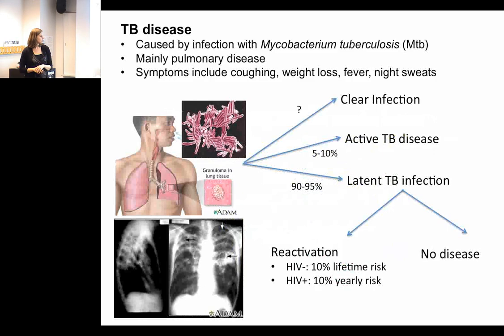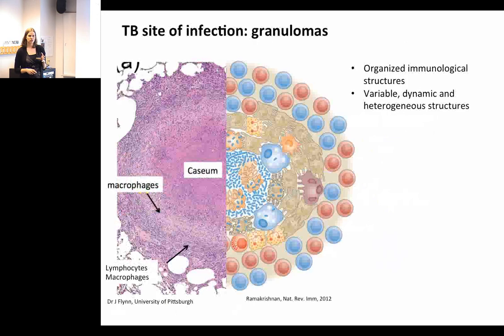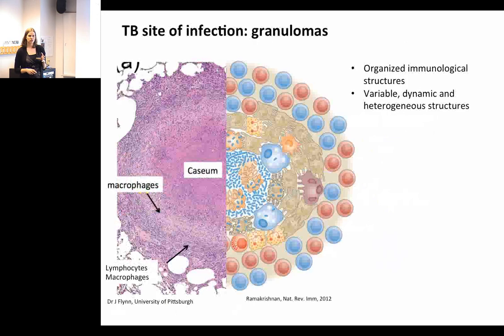About five to ten percent of people will progress to active TB disease, but the majority develop latent infection. If latently infected, there's about a ten percent lifetime risk of developing active TB, or reactivation TB. This increases to about ten percent yearly risk if you're HIV positive, although most people spend their whole lives colonized by the bacteria without ever developing disease. The bacteria seed in your lungs and form structures called granulomas — very structured, immunological, tumor-like structures with a casein necrotic core surrounded by macrophages and a lymphocyte cuff.